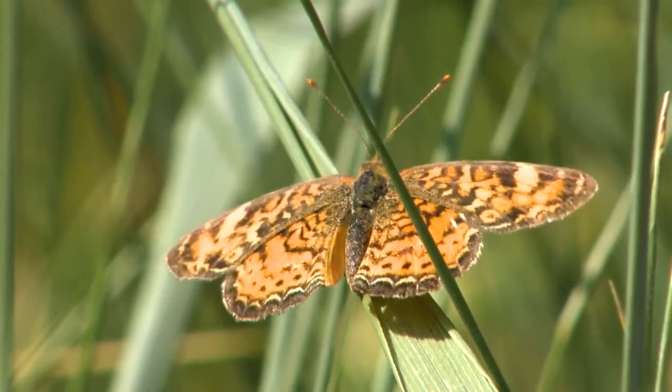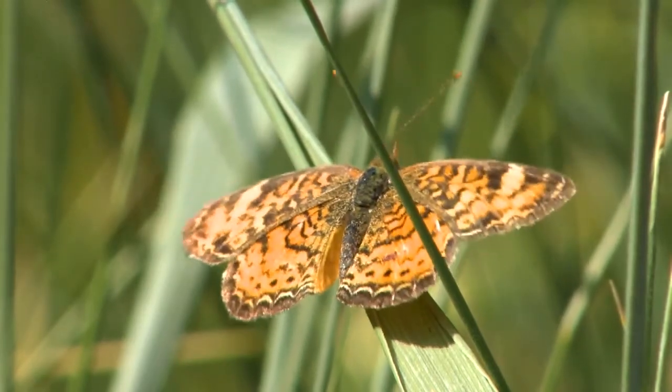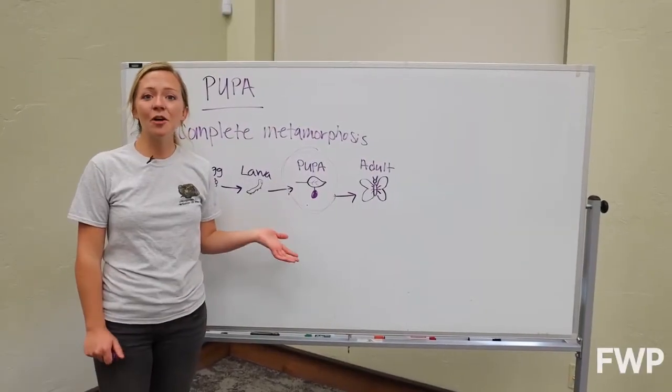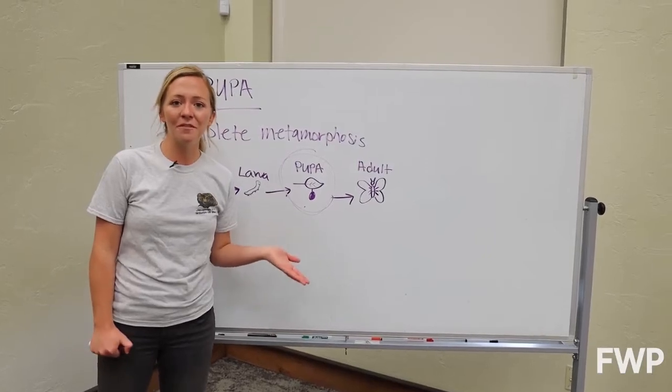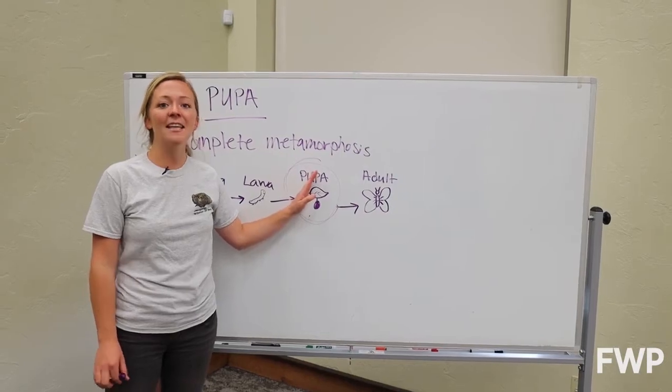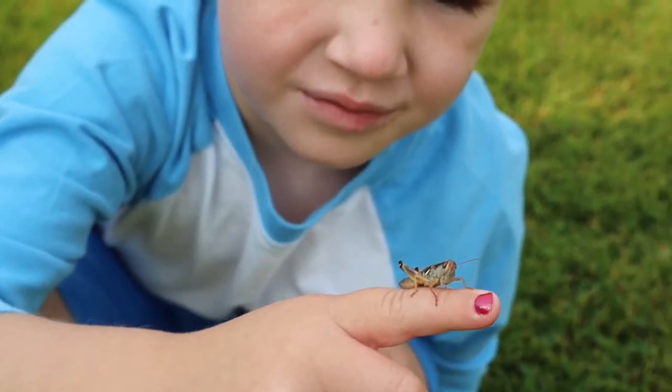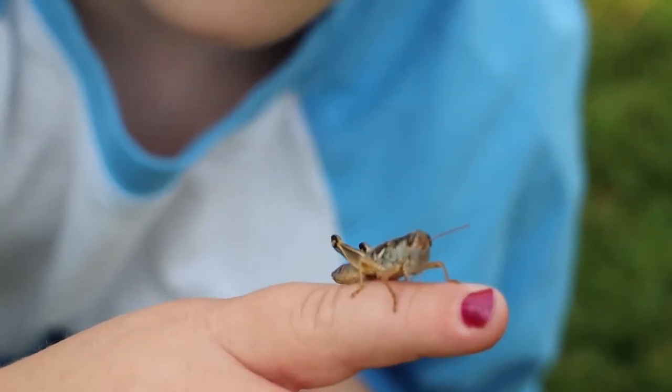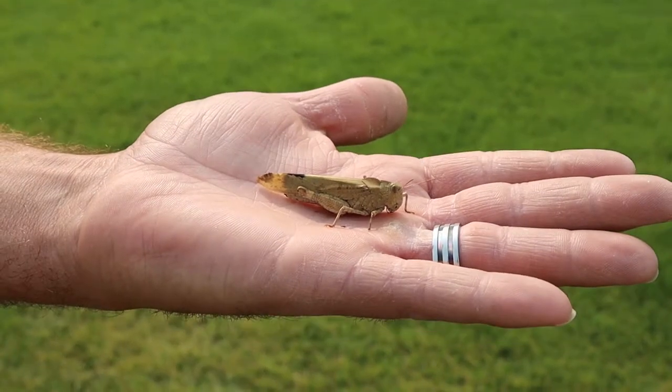Butterflies are a classic example of complete metamorphosis. Insects that go through incomplete metamorphosis like a grasshopper for example does not have a pupa. They go from egg to different sizes of nymphs that look just like the adult and finally the adult stage.